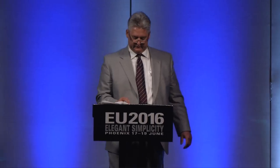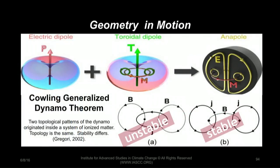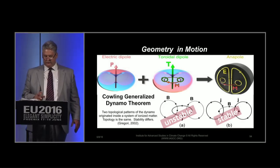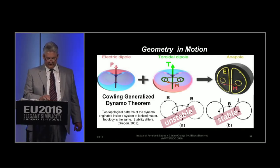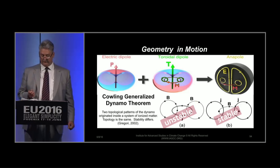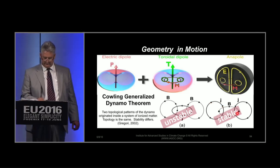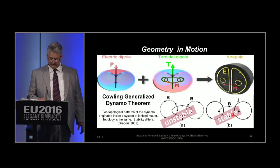Then I want to look at how that's tied to some classical physics information. You have your basic electric dipole plus your magnetic dipole or toroidal. If you put these two together, you create the antipole. This feature has a configuration kind of like a human brain cut in cross-section. If you relate that to Cowling's generalized dynamo theorem, you see that the unstable configuration has an electric field at the toroidal, and these polar or poloidal fields — magnetic — are an unstable configuration.